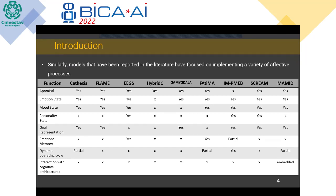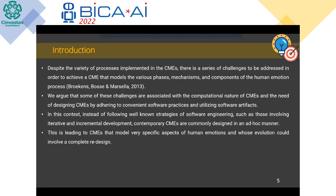Similarly to these two researchers, different models have been reported, focused on implementing a variety of affective processes. As we can see in the table, most of the models implement an appraisal mechanism, an emotional state, a mood state, a personality state, but not all implement a goal representation or emotional memory. The variety of affective processes that a model of emotion includes differs from one to another. Despite this variety, there is a series of challenges that need to be addressed in order to achieve CMEs that model various phases, mechanisms, and components of the human emotion process.